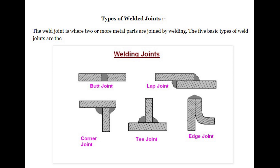Now let's learn about types of welded joints. The weld joint is where two or more metal parts are joined by welding. The five basic types of weld joints are: Number 1 — Butt Joint, Number 2 — Corner Joint, Number 3 — T Joint, Number 4 — Lap Joint, and Number 5 — Edge Joint.